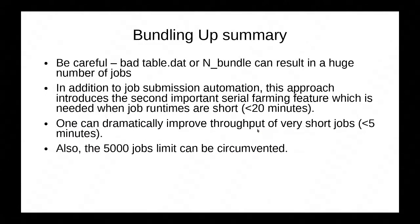Here's the summary of this example. First, a comment applicable to all examples: be careful — a bad table.dat file or bad parameters can result in a huge number of jobs submitted, so you have to monitor the job submission stage. This example introduces the bundling up feature, which is great if your individual job runtime is less than 20 minutes. If it's even shorter than that — shorter than 5 minutes — the throughput can dramatically improve if you start bundling up. And obviously now we can bypass the 5,000 job limit.